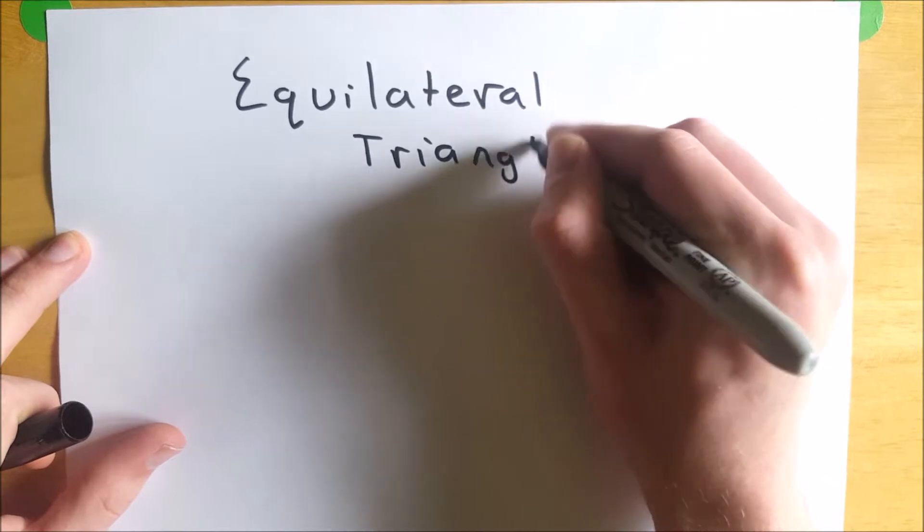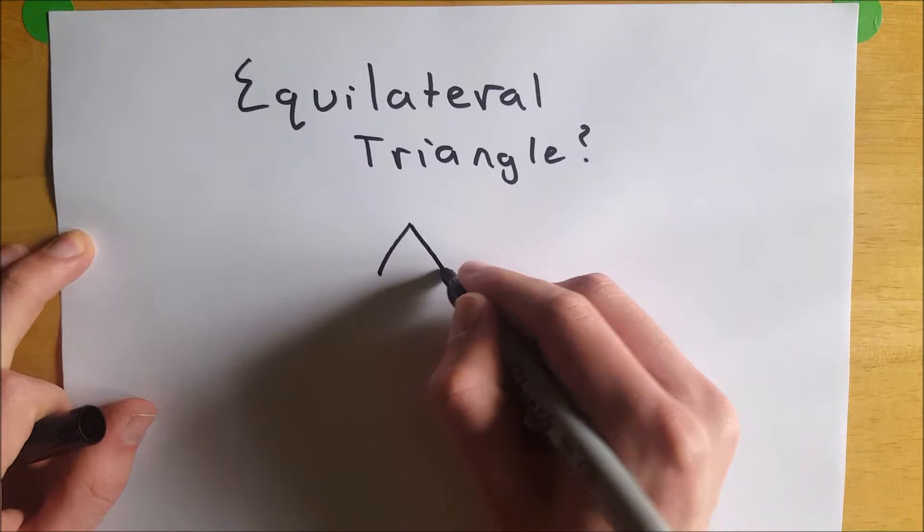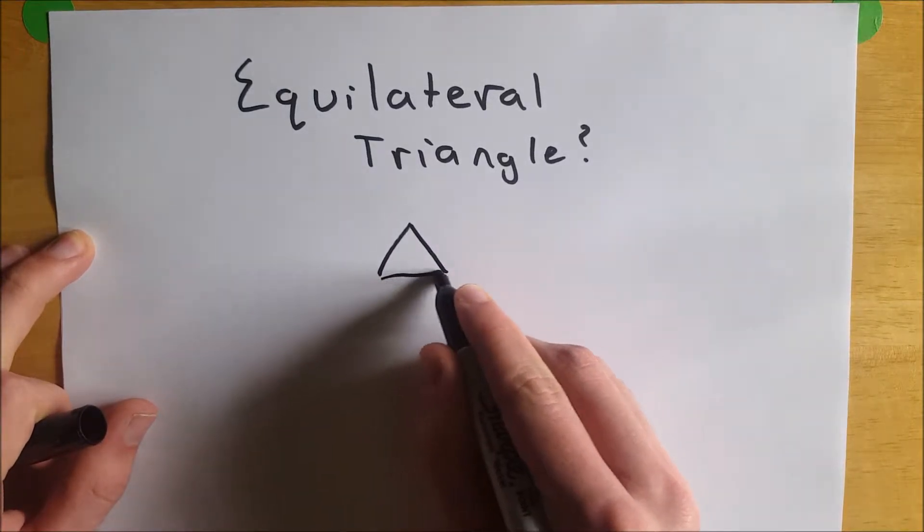It's pretty simple, shouldn't take too long. A triangle is equilateral if and only if all of its sides have the same length.